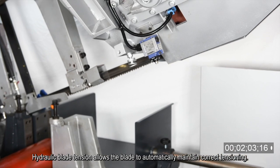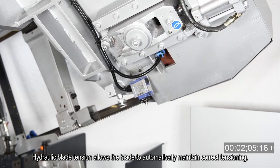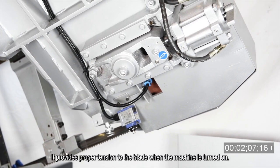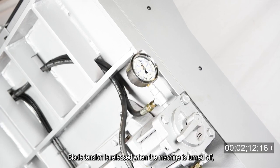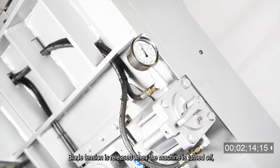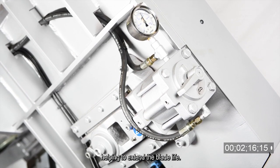Hydraulic blade tension allows the blade to automatically maintain correct tensioning. It provides proper tension to the blade when the machine is turned on. Blade tension is released when the machine is turned off, helping to extend the blade life.